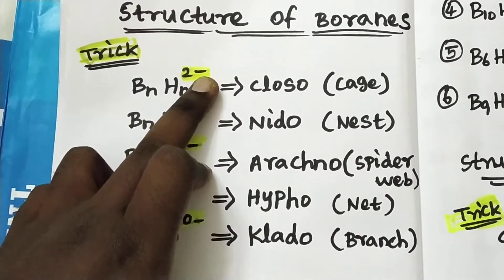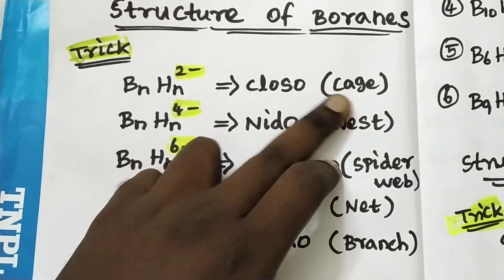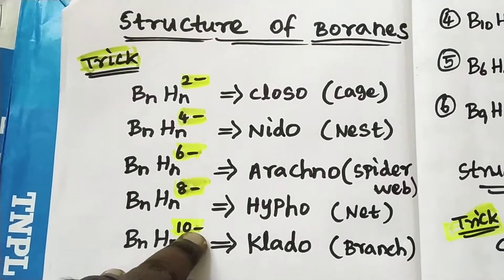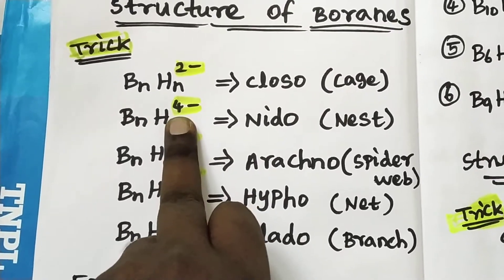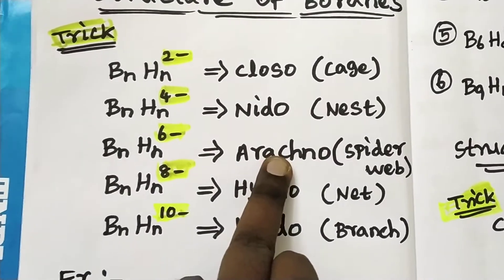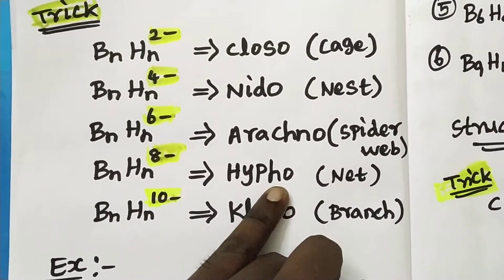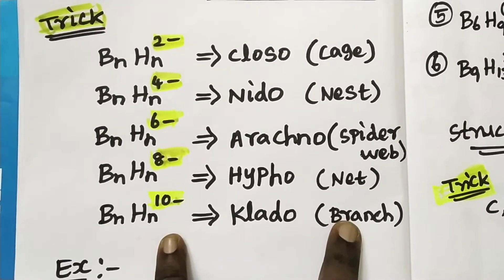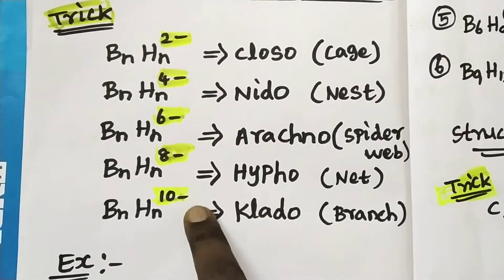In the BnHn format: a 2- charge gives a closo (cage-like) structure; 4- gives a nido (nest-like) structure; 6- gives an arachno structure; 8- gives a hypho structure; and 10- gives a klado (branch-like) structure.